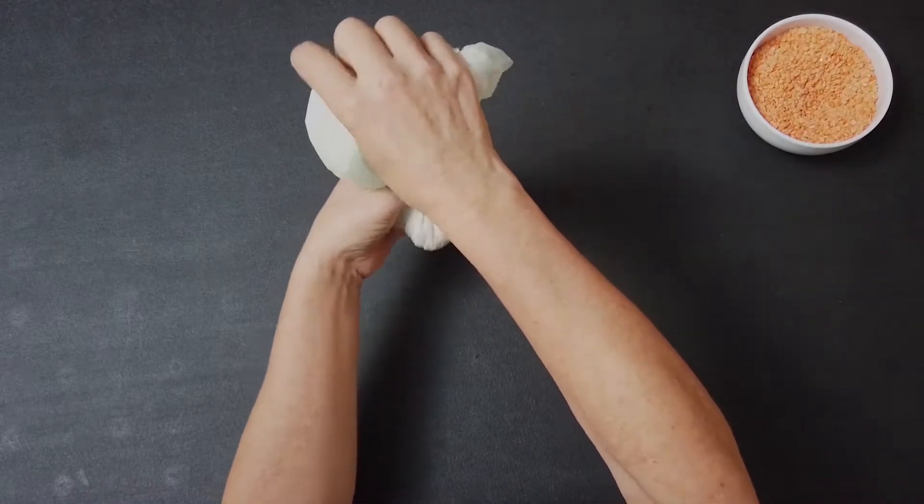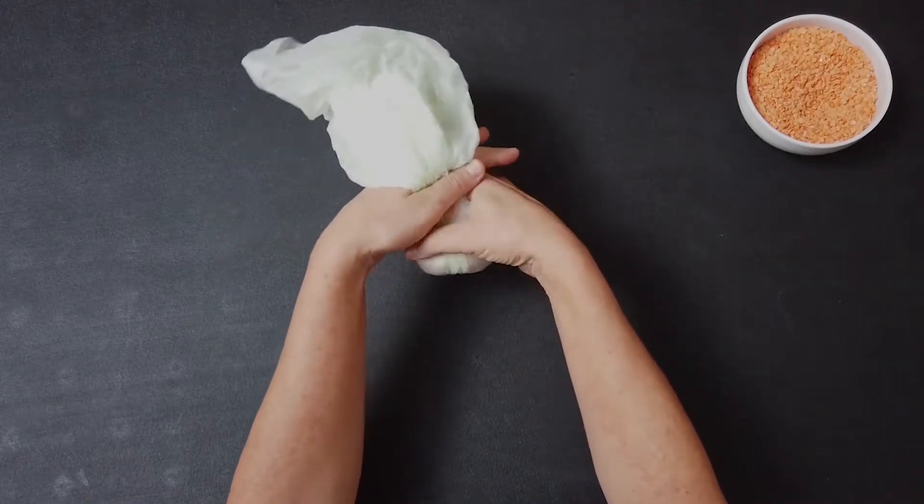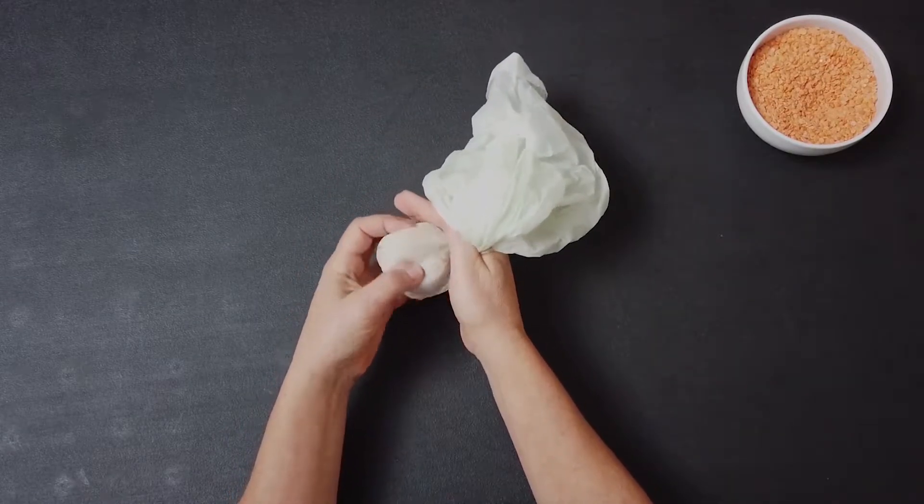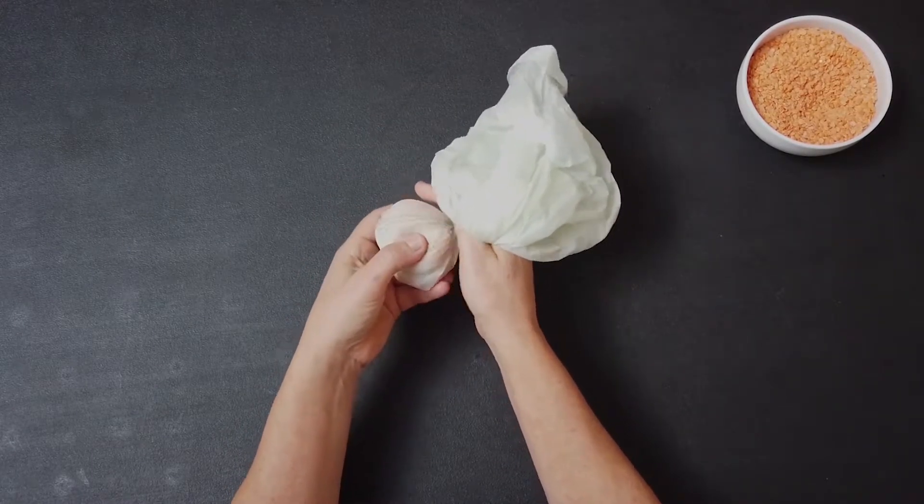So you've got two wraps. It's double bagged and then you're going to twist it a couple more times. Lay it down on itself.